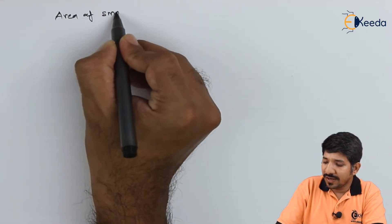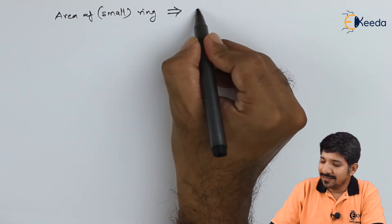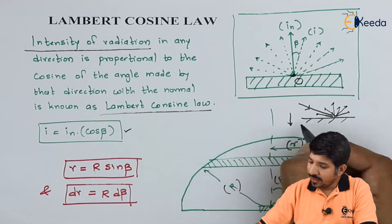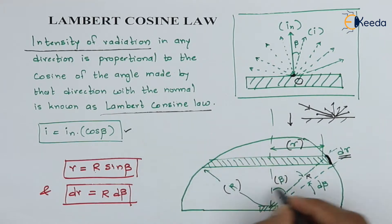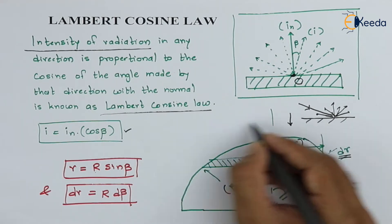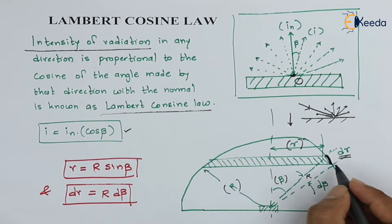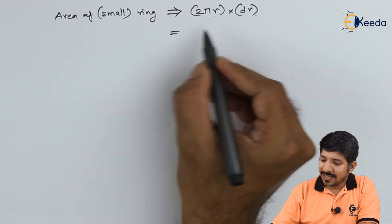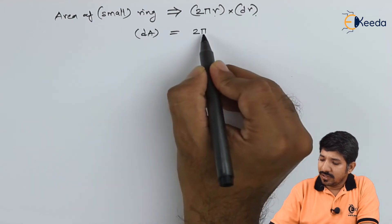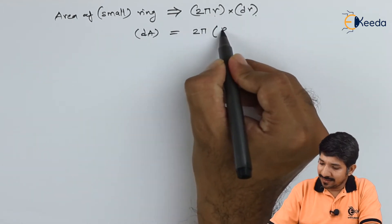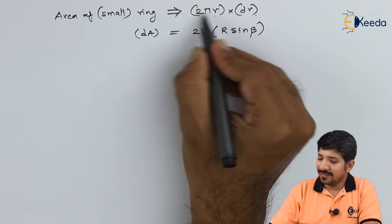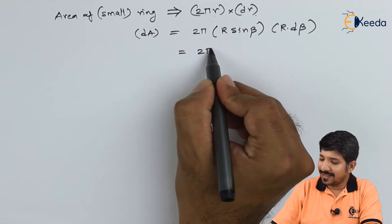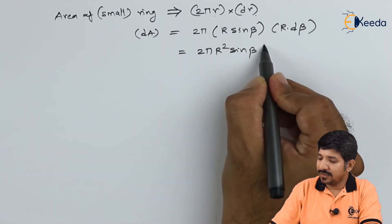The area of the small ring can be given as 2πr times DR, which is the circumference times the thickness. When looking from above, this is simply the circumference 2πr into the thickness DR. Substituting the values, r equals R·sinβ and DR equals R·dβ, so the area dA can be written as 2πR²·sinβ·dβ.